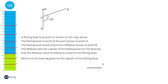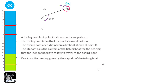The question is asking us to find the bearing of O from B. The lifeboat is at B, so we draw a north line there. To find a bearing, you start from the north line and go clockwise. The angle given in the question and the angle X we're looking for are going to be equal, so X equals 135 degrees.